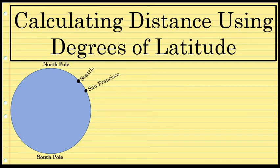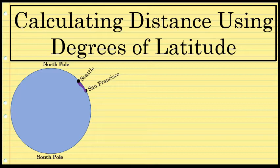In this video I'm going to discuss how to calculate the distance from Seattle to San Francisco — the distance I'm outlining in purple on the screen — using just their degrees of latitude. This process will work for finding the distance between two locations that are about directly north and south of each other, as Seattle and San Francisco are.